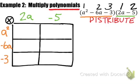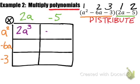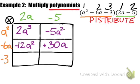We're going to use multiplication to distribute — multiply 2a times a squared and put that product in this box, and a squared times negative 5 in that box. So 2a times a squared gives us 2a cubed. Then a squared times negative 5 gives negative 5a squared. Going down: negative 6a times 2a gives negative 12a squared, and negative 6a times negative 5 gives positive 30a. Finally, negative 3 times 2a gives negative 6a, and negative 3 times negative 5 gives positive 15.